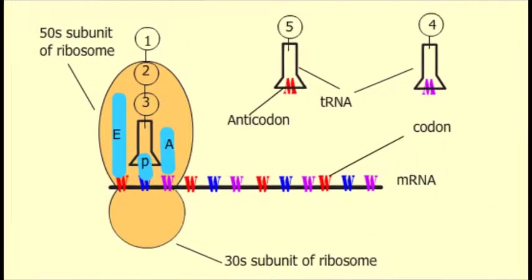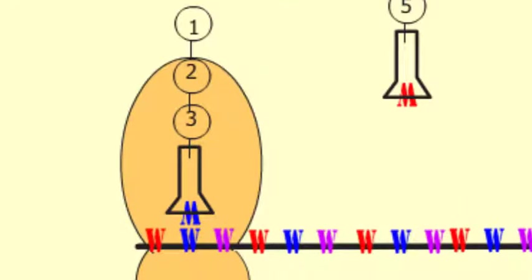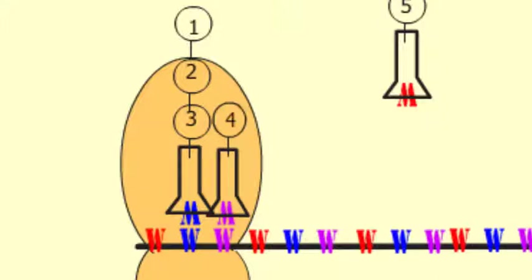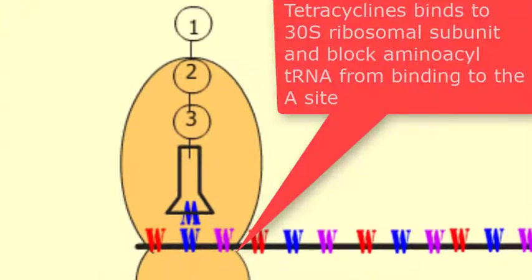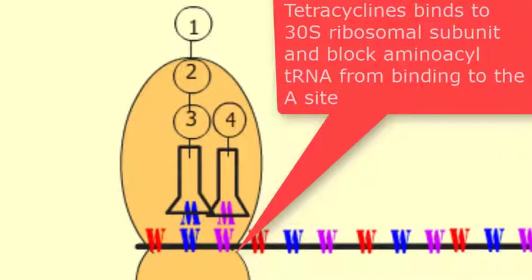The incoming tRNA carrying the next amino acid can also be seen. Under normal circumstances, the nascent peptide is attached to the ribosome at the peptidyl site or P site, and the next aminoacyl-tRNA binds to the acceptor or aminoacyl site (A site). Tetracyclines bind to the 30S ribosomal subunit and block aminoacyl-tRNA from binding to the A site.